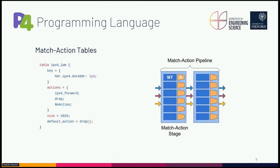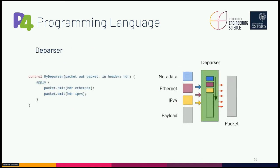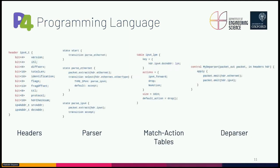The extracted packet headers and specified metadata can be used by match-action tables. Each table specifies keys and a set of actions, as well as other parameters such as size and default action. Actions can add, modify, or remove packet headers or the metadata associated with the packet. The deparser is used to assemble the packet at the end and also specifies the order of the packet headers. A P4 program consists of these basic building blocks, which allow defining the packet processing logic at a high level.